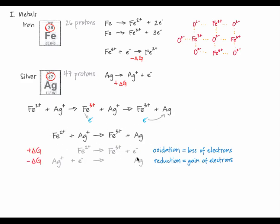The first half-reaction, the oxidation of iron 2+, is unfavorable — iron 3+ is less stable than iron 2+, so it has a positive delta G. The reduction of silver+ to neutral silver is favorable. Neutral silver is more stable than silver+, so this process has a negative delta G. The favorability of forming neutral silver is more than the unfavorability of forming iron 3+, so overall this redox reaction is spontaneous and has a negative delta G.